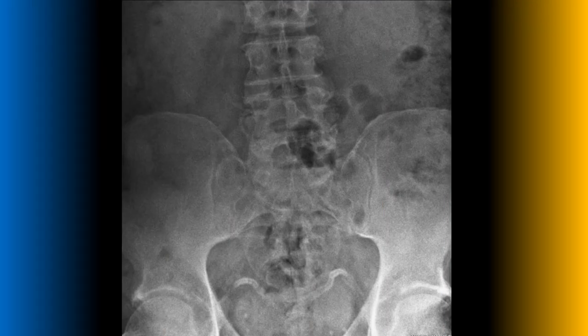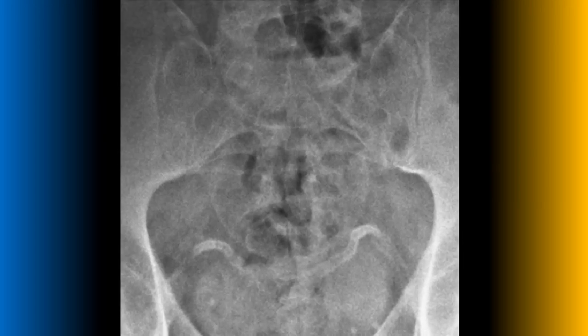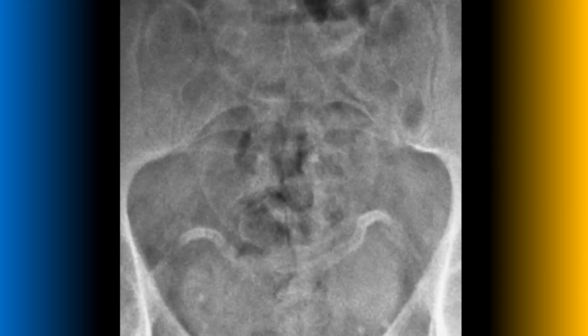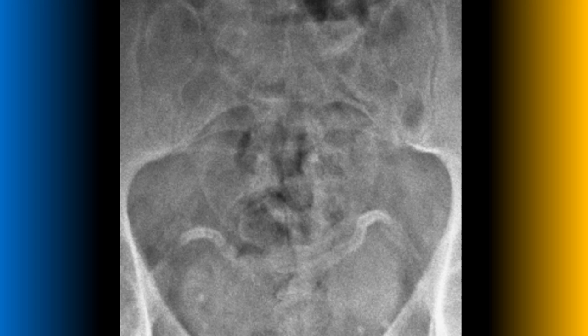Here's a frontal lumbopelvic radiograph. Looking closely at the pelvic basin, you should notice a serpiginous tubular conduit wall calcification extending inferomedially on both sides of the pelvis. This is seen only in males and represents calcification of the vas deferens.